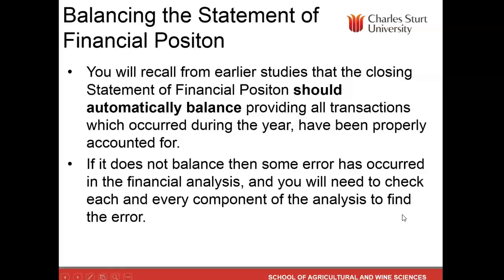The closing statement of financial position should automatically balance, providing all transactions during the year have been properly accounted for. But if it doesn't balance, some error has occurred. One thing to remember is the concept of materiality — if you're dealing with $5 million or $2 million figures and you're non-balancing by about $60, $70, or even a couple of hundred dollars, the likelihood is you've probably balanced the balance sheet, with the problem likely a rounding error to do with cost of production or a cents-per-kilogram figure just throwing it out of balance.